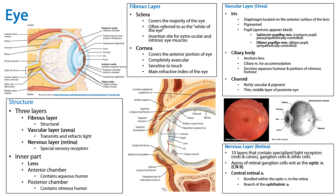We've discussed the eye and its three layers — fibrous, vascular, and nervous — as well as its inner part. This is your summary slide. Thank you for your time.